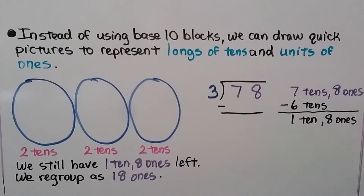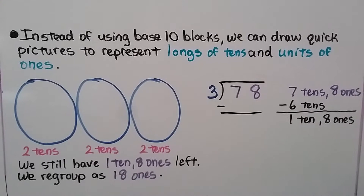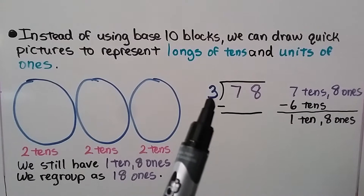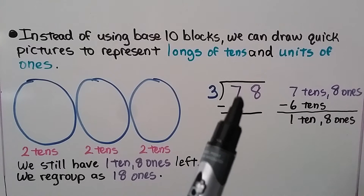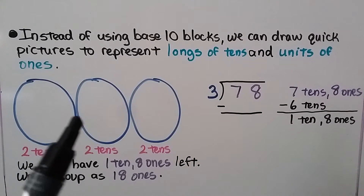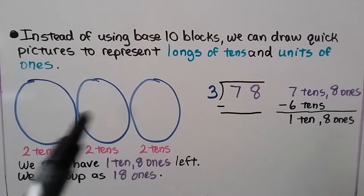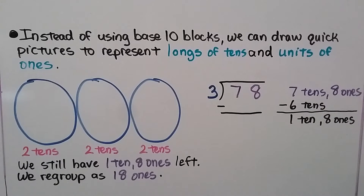Instead of using base-10 blocks, we can draw quick pictures — a line for a long of 10 and a dot or small circle for units of 1. Here we have 78 divided by 3. We need to see how many times 3 fits into 78. 78 is 7 tens and 8 ones. Our divisor is 3, so we have 3 groups, and we start putting tens equally into each group.